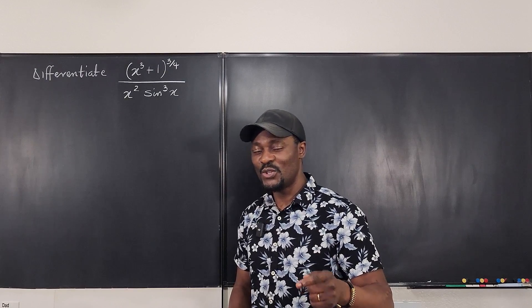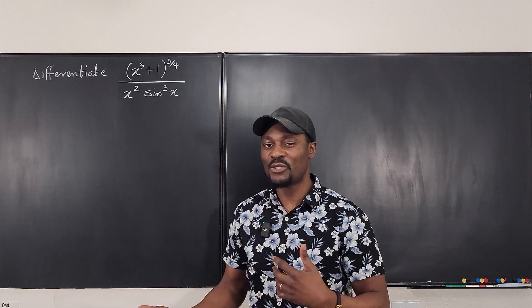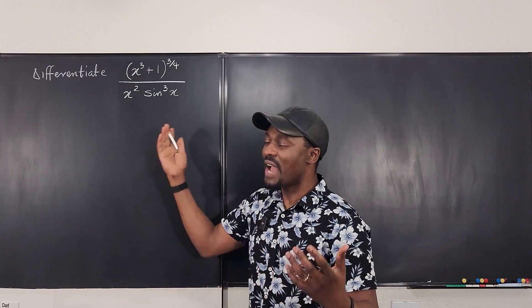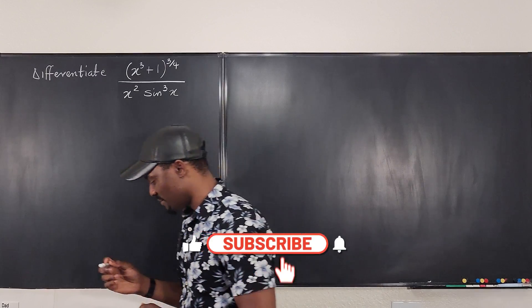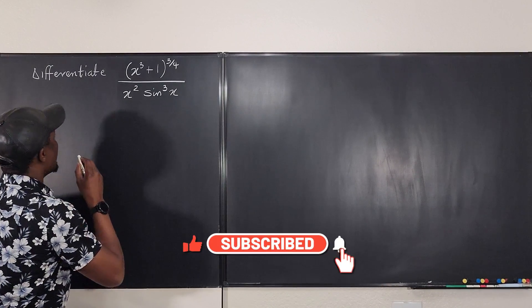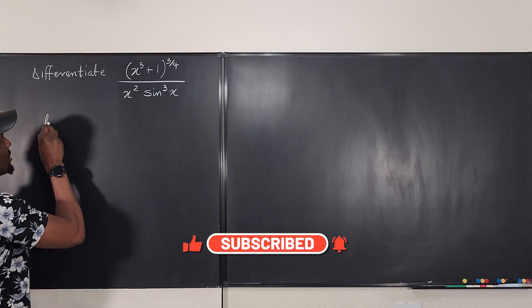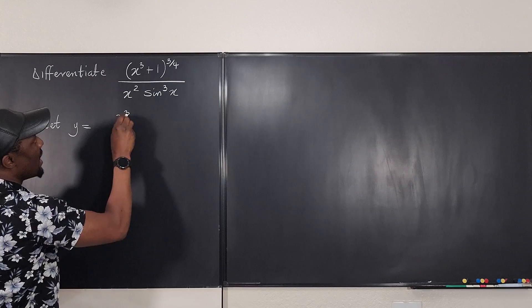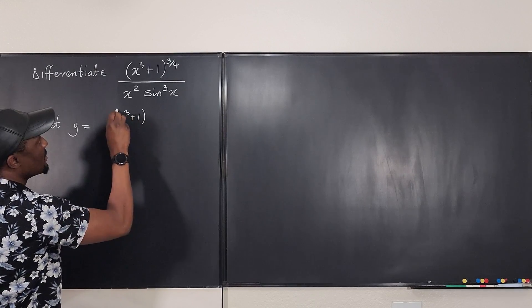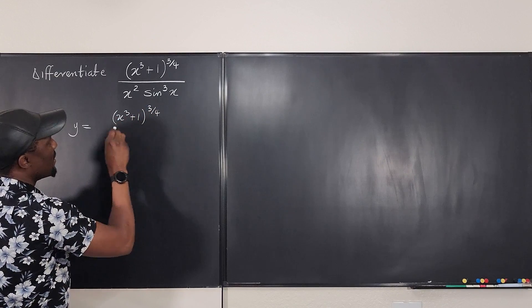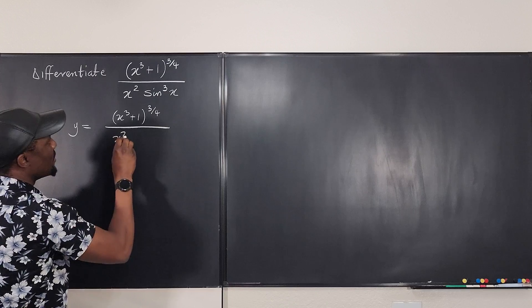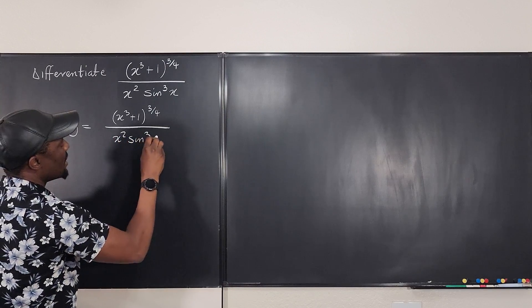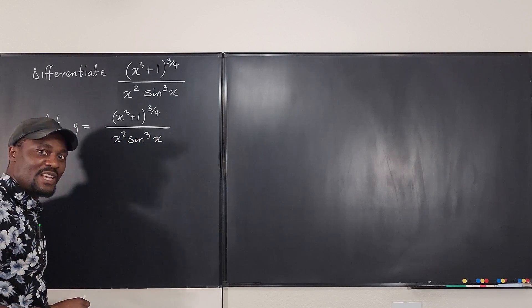For logarithmic differentiation, you just want to introduce natural log and rewrite this. I'm going to say let y be equal to this function: x cubed plus 1 to the 3 fourth divided by x squared sine cubed x. Now you can see where I'm going.